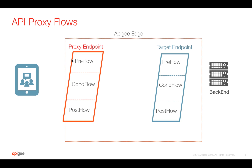Similarly, the target endpoint is also divided into pre-flow, conditional flow, and post-flow. Whenever the request comes in, it first hits the proxy endpoint pre-flow. Pre-flow always executes no matter what.